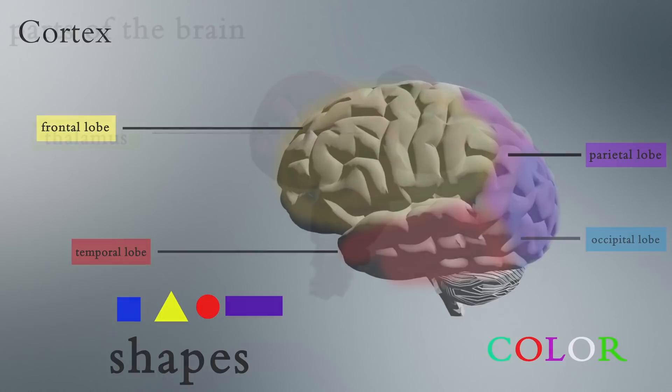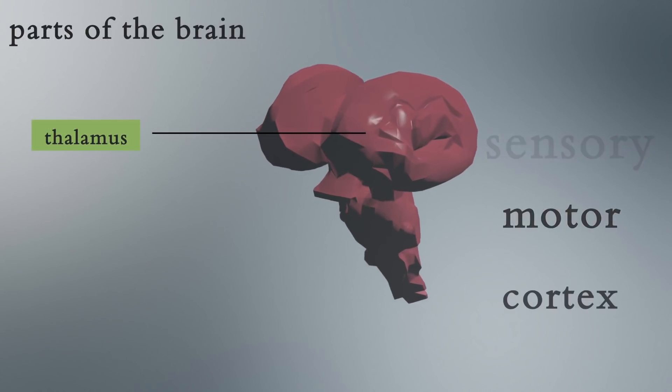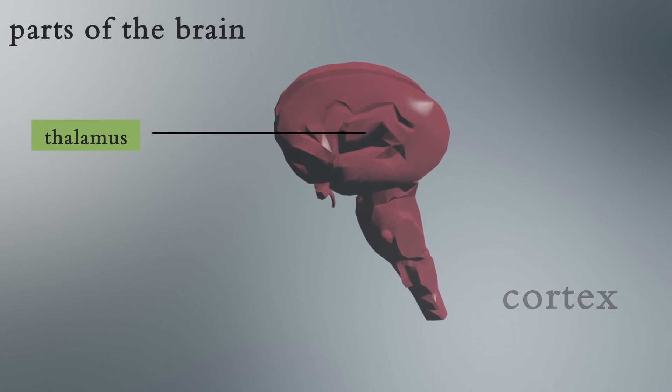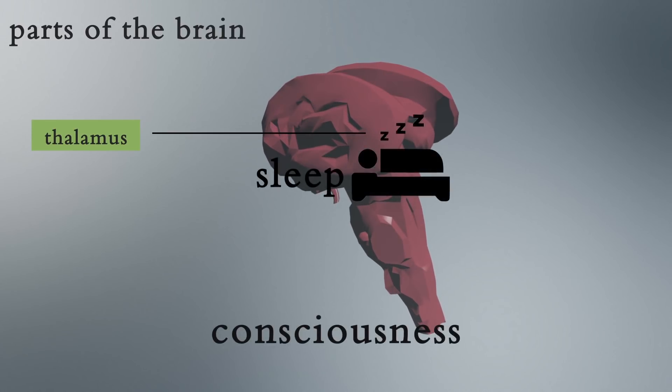The thalamus in the center of the brain relays sensory and motor information to the cortex, and helps with consciousness, sleep, and alertness.